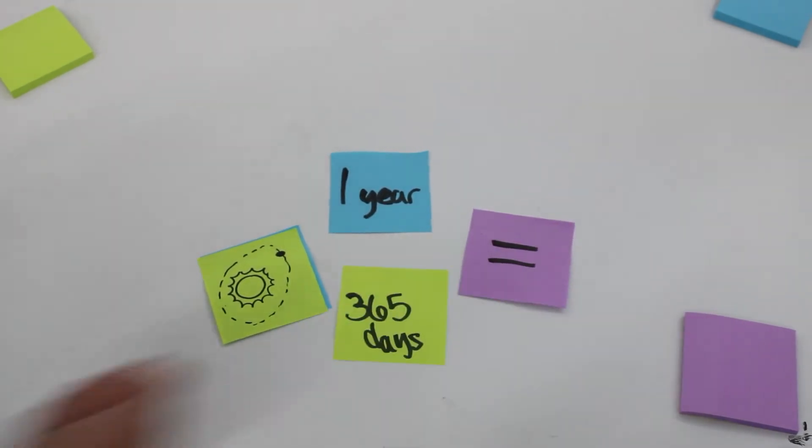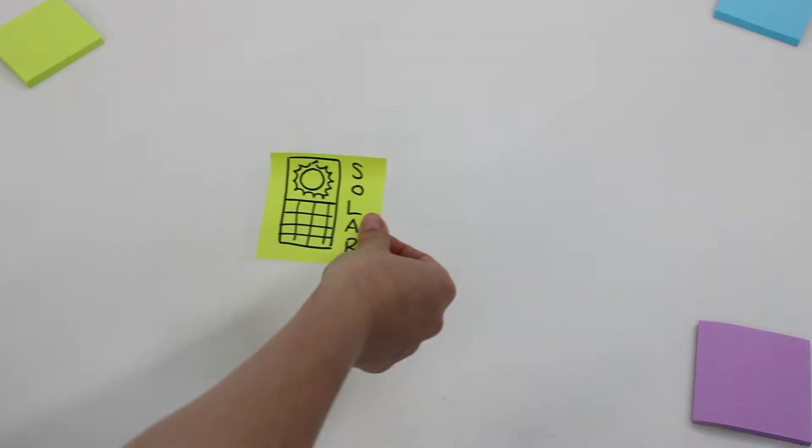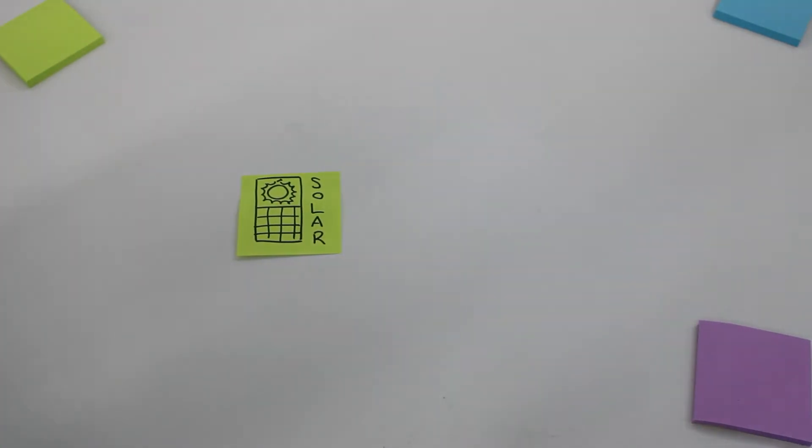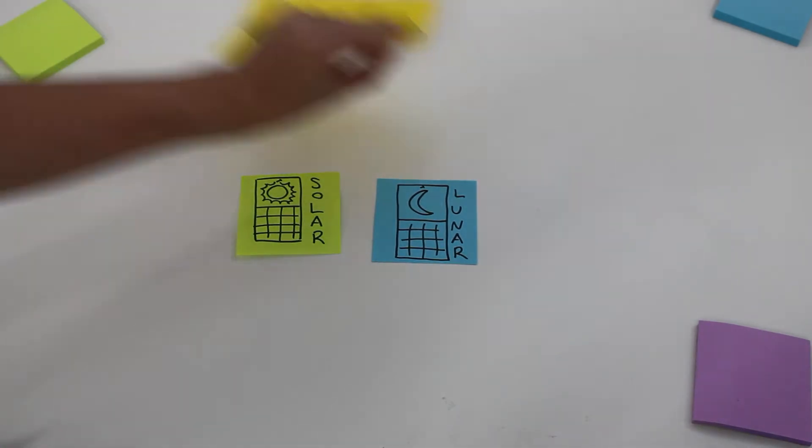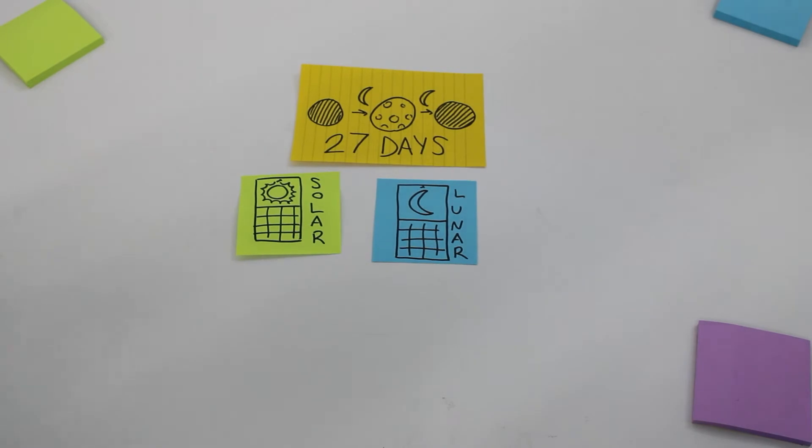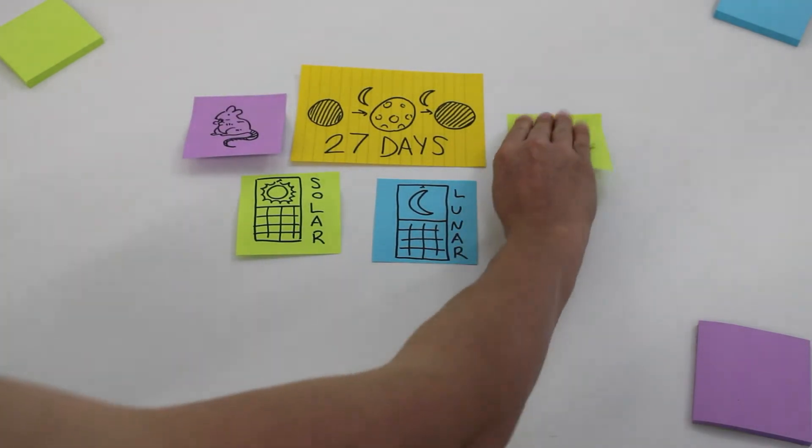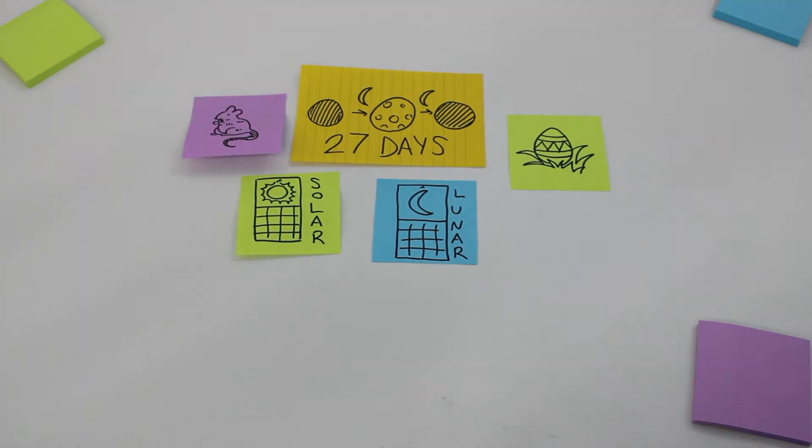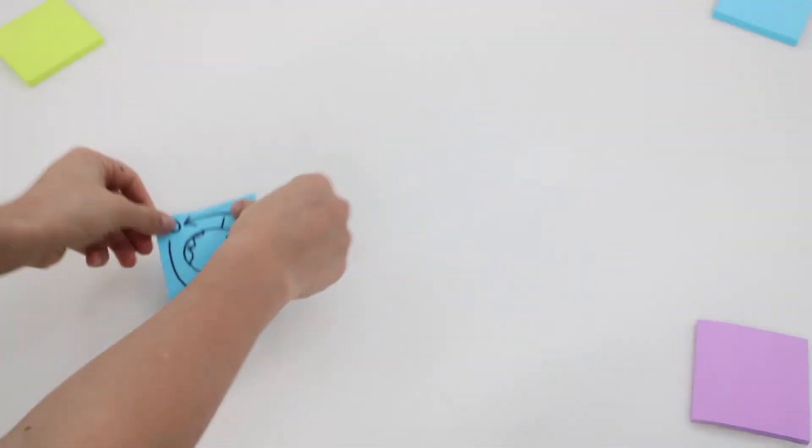So far so good. Some cultures opted, in addition to a solar calendar, to use a lunar calendar. It takes about 27 days for the moon to go through a complete lunar cycle from new to full and back to new again. This is how long it takes the moon to orbit the earth. Some holidays and festivals are marked according to a lunar calendar, like the new year or Easter.